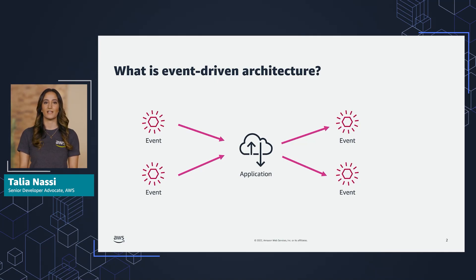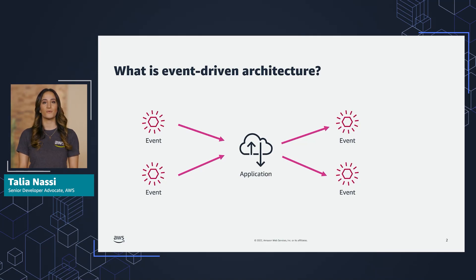Event-driven architecture can allow you to decouple your services, which increases developer velocity and can make it easier for you to debug applications. It can also help remove the bottleneck that occurs when features expand across different teams, which allows teams to progress more independently.